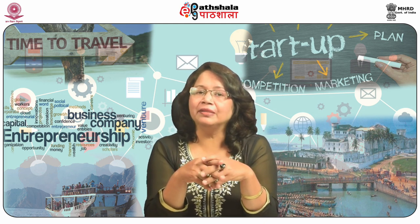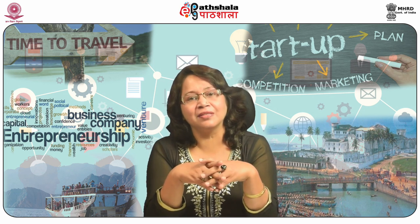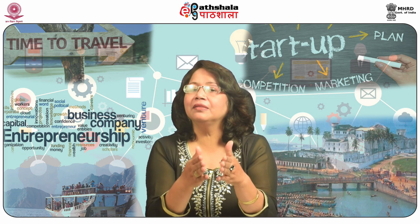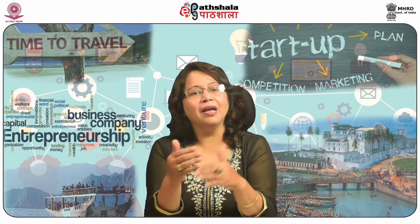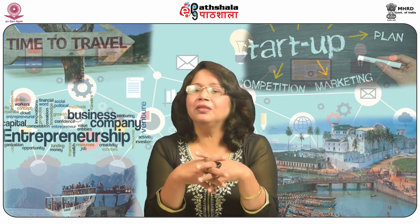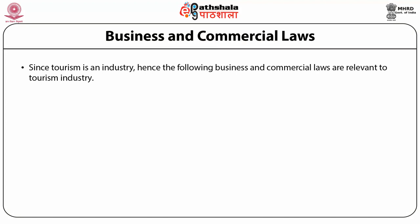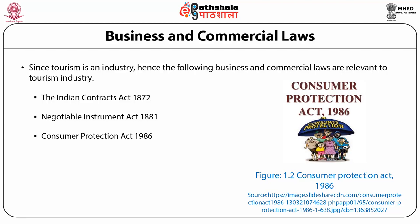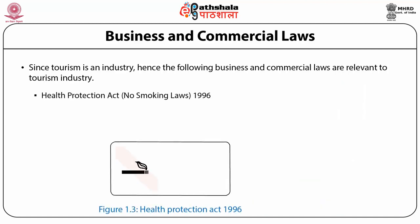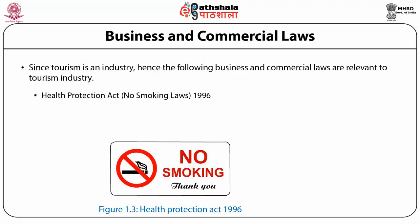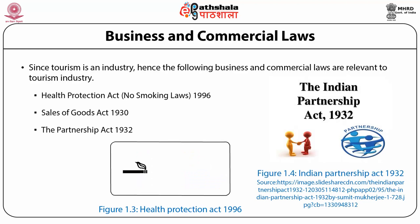This act also provides the consumer complaint redressal system with the district forum at the district level, the state commission at the state level, and the national commission in New Delhi. Since tourism is an industry, the following business and commercial laws are relevant to the tourism industry: the Indian Contract Act 1872, Negotiable Instrument Act 1881, Consumer Protection Act 1986, Shops and Establishment Act (state-specific), Health Protection Act, No Smoking Laws 1996, Sale of Goods Act 1930, and the Partnership Act 1932.